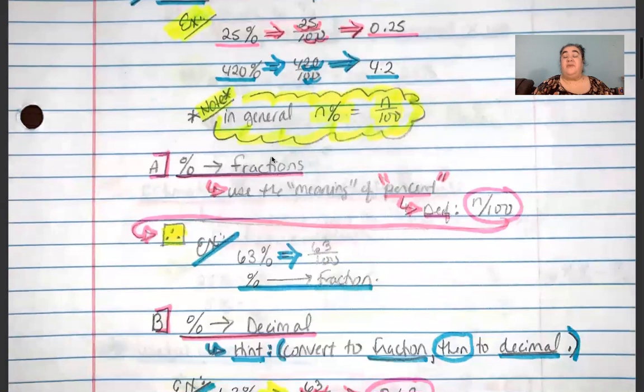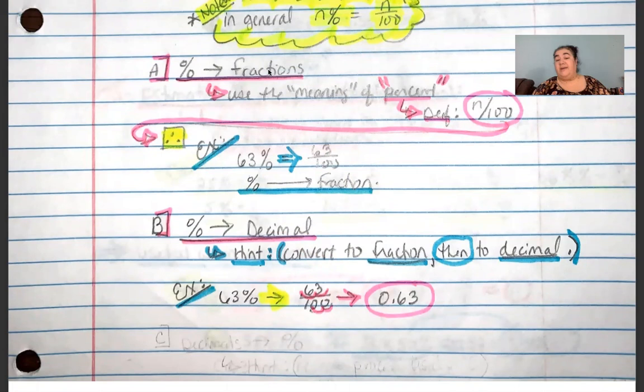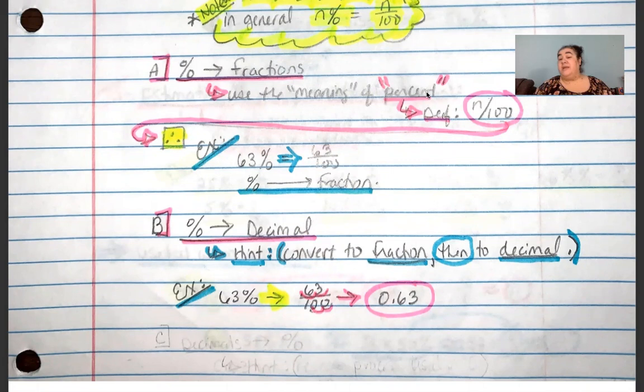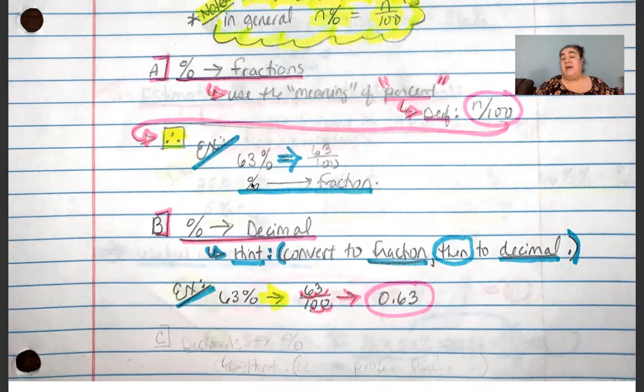To convert a percentage into a fraction, we simply use the meaning of the word percent. Since percent means something out of a hundred, 63% is just 63 out of a hundred — and we're already in fractional form. If necessary or possible, you could simplify that fraction. That's how we go from percent to fraction: pretty simple, pretty straightforward, no real complication.